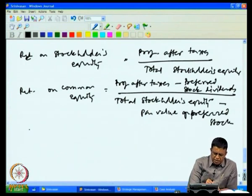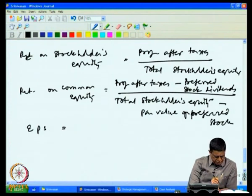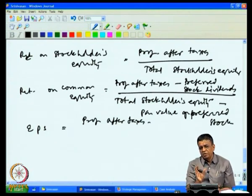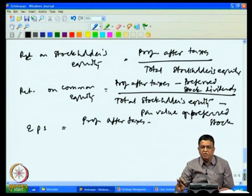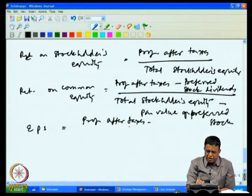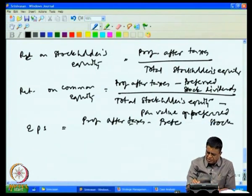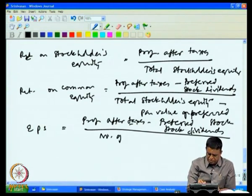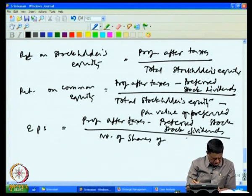The last profitability ratio we are interested in is earnings per share (EPS). EPS is calculated by profit after taxes — note we are looking at profit after taxes in most of these calculations, since there is no further encumbrance on this figure — minus preferred stock dividends, divided by the number of shares of common stock outstanding.